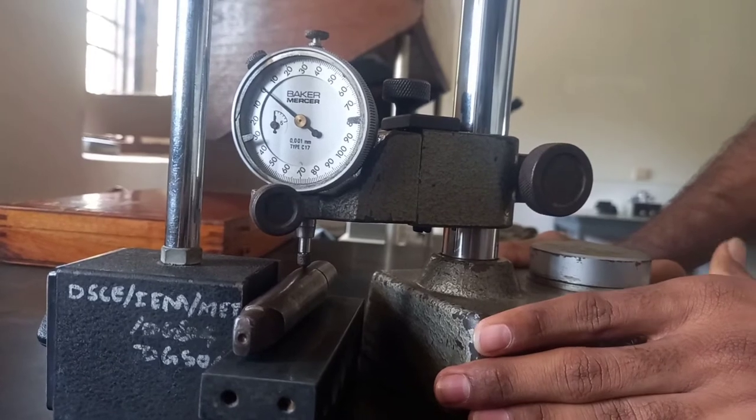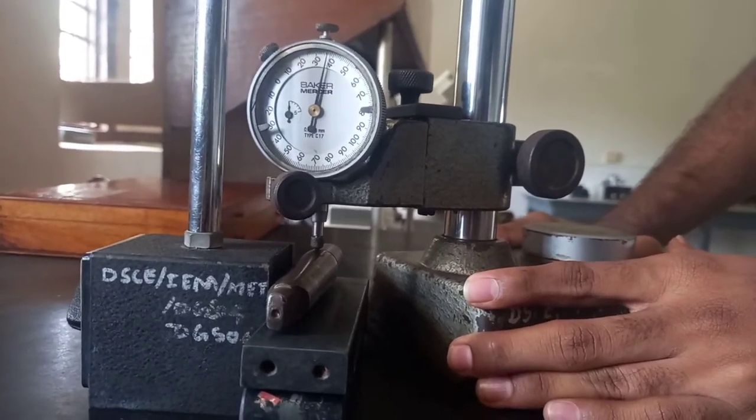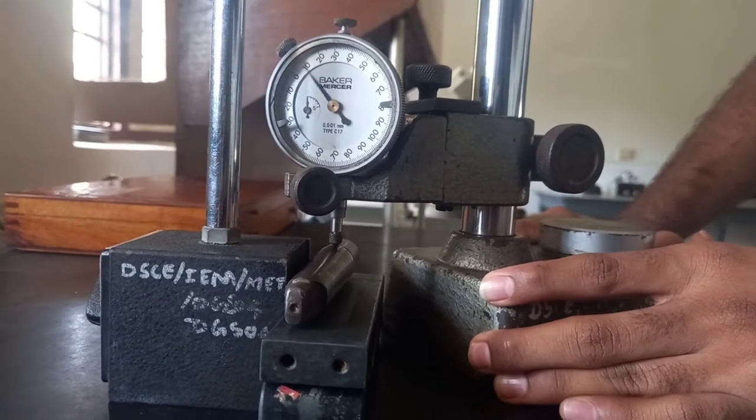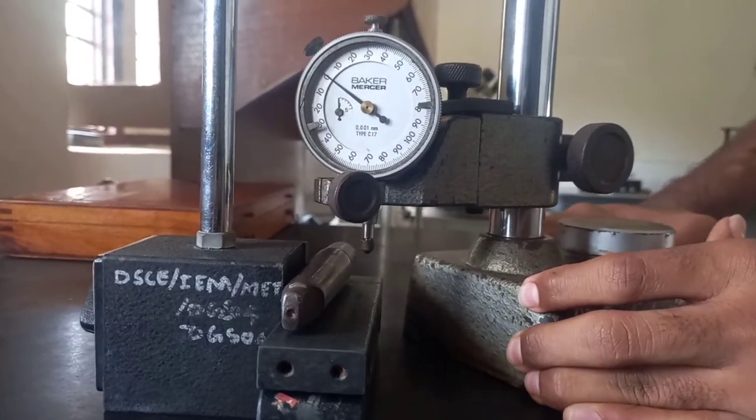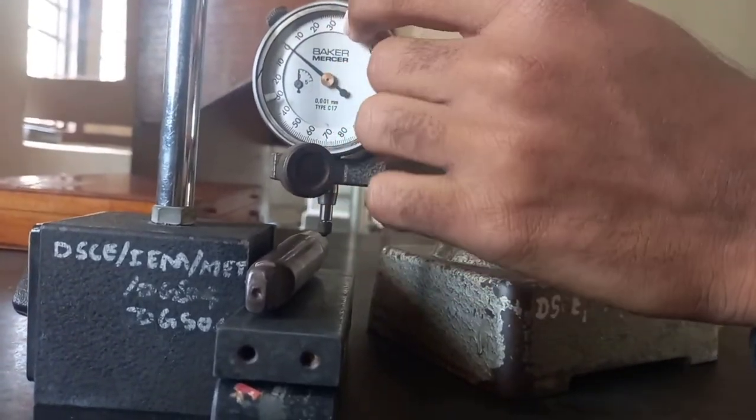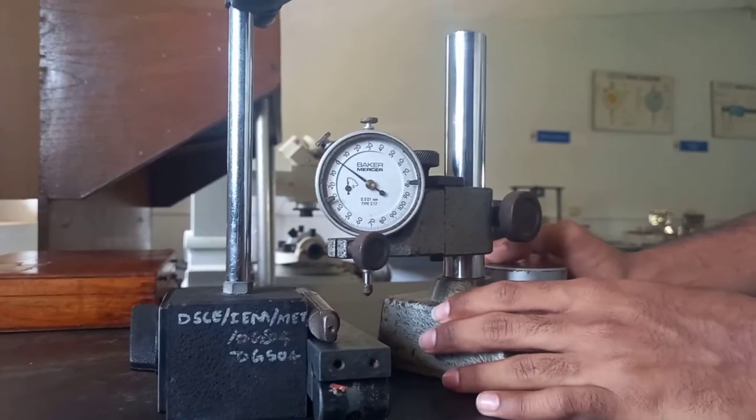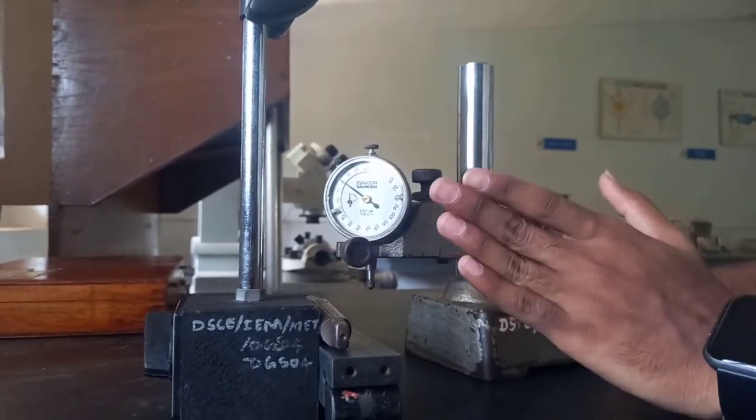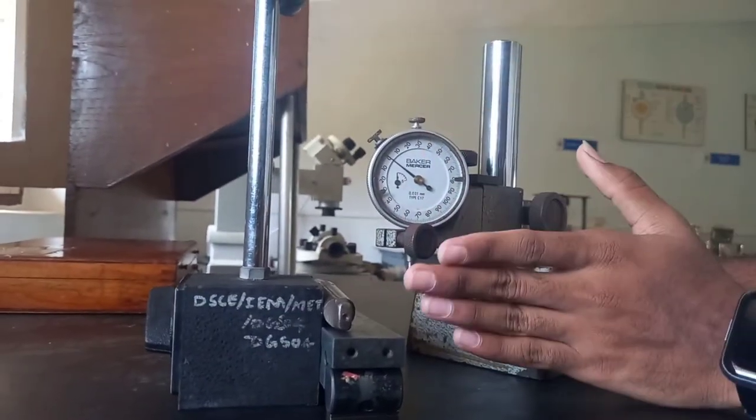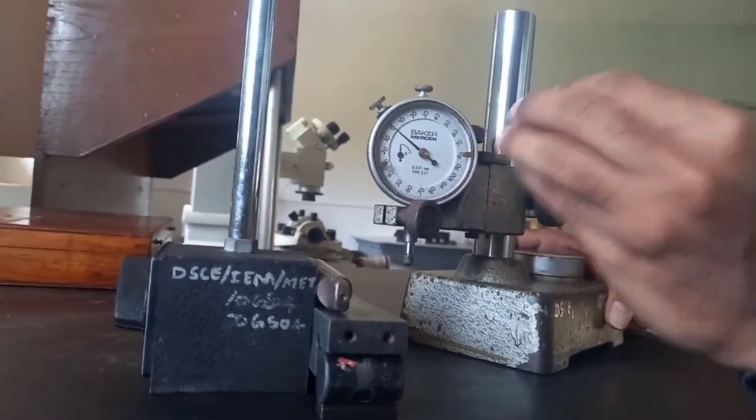As you can see the maximum deflection was around 35. So we consider this side deflection as around 35. So we got the difference between the major diameter side and minor diameter side as 15 microns.